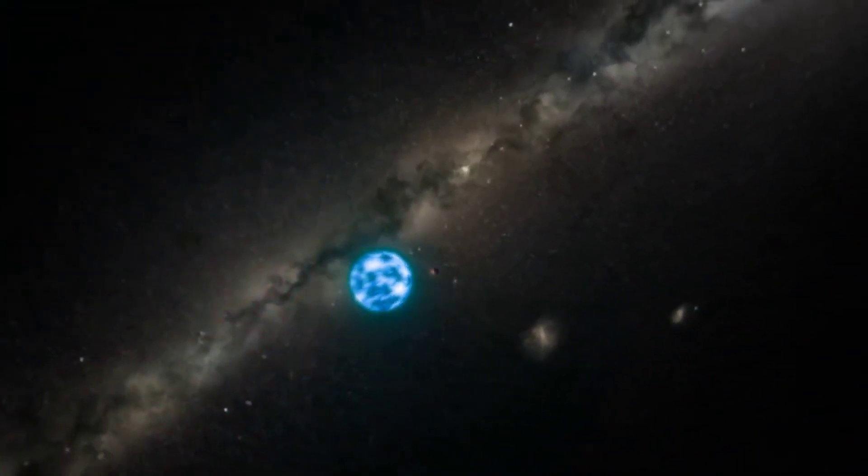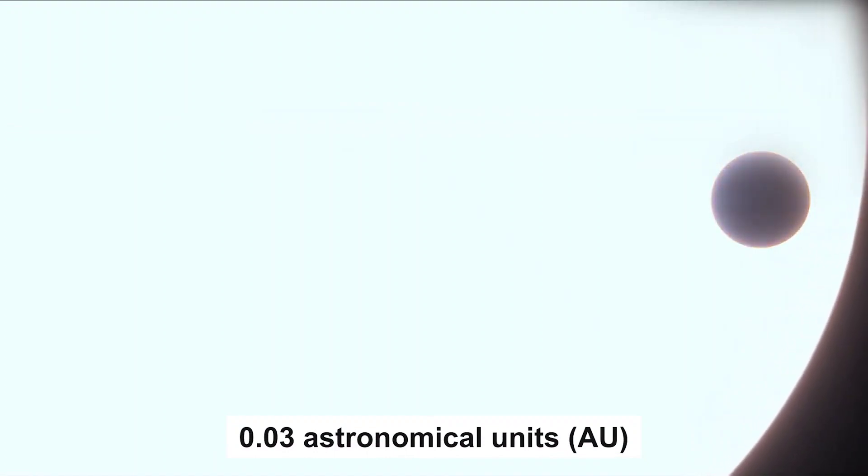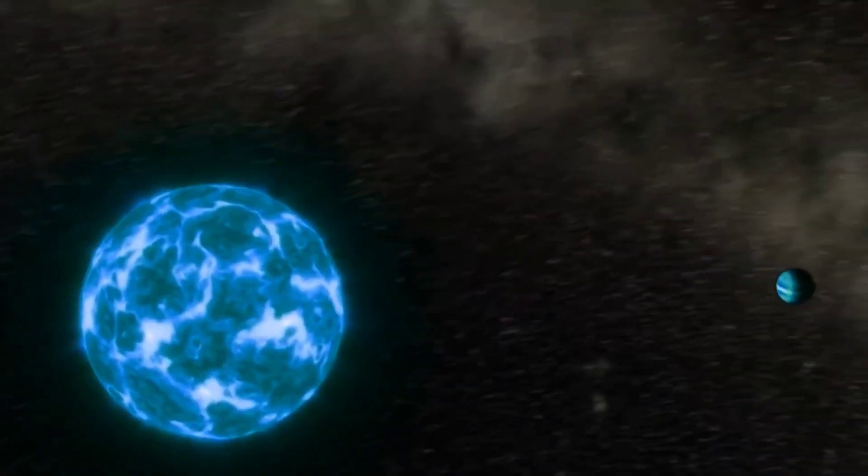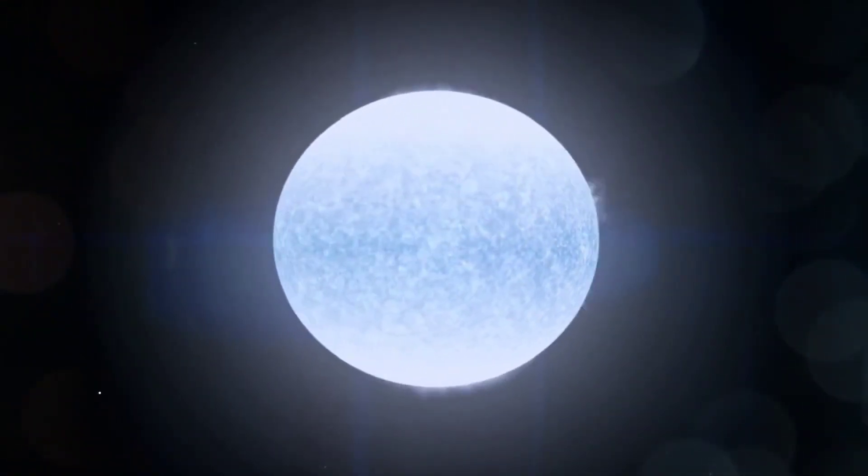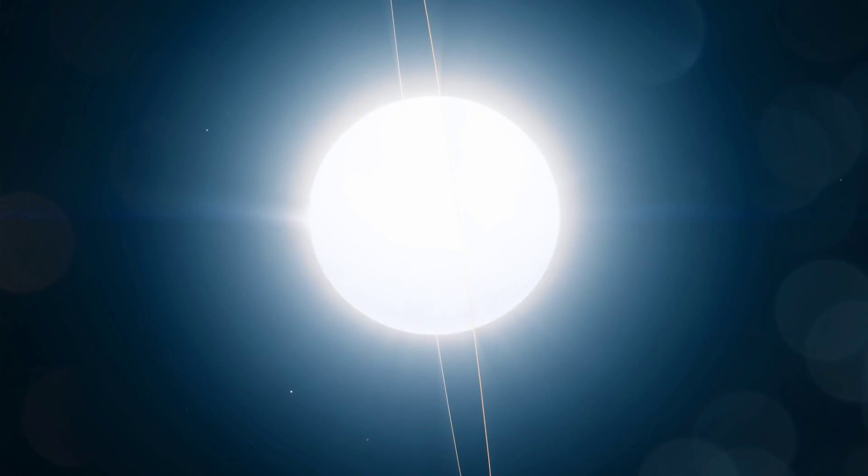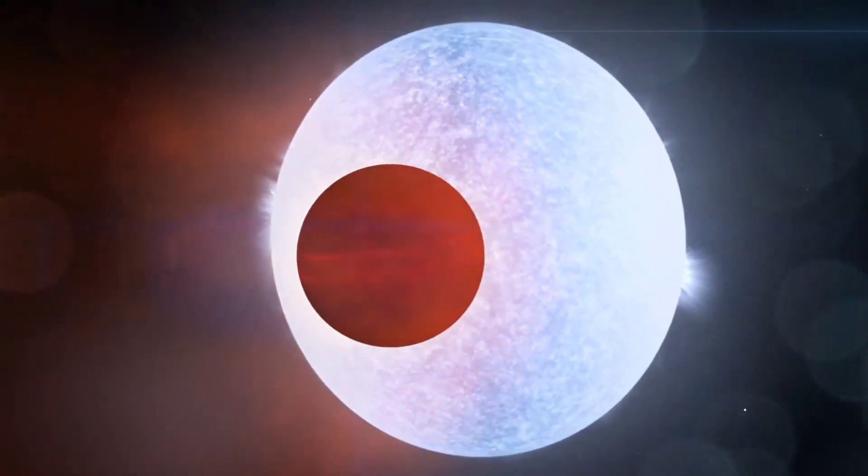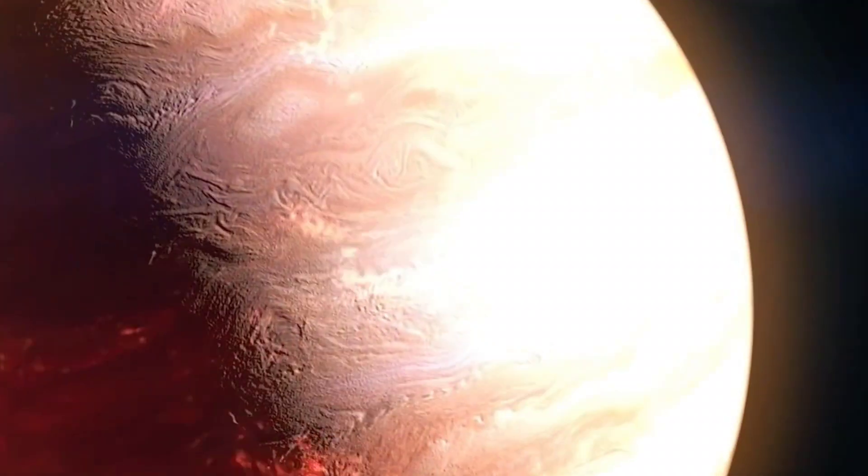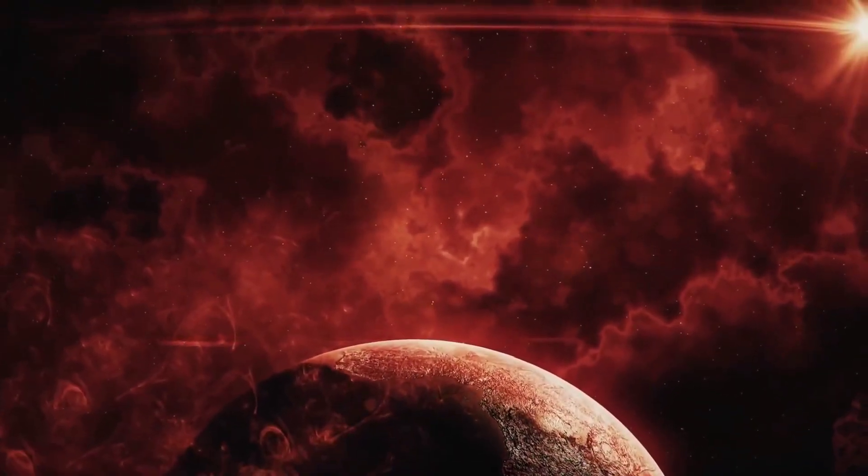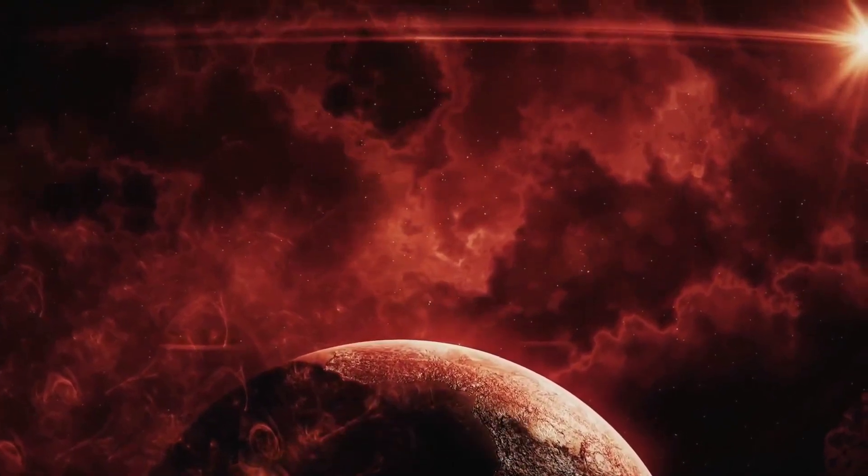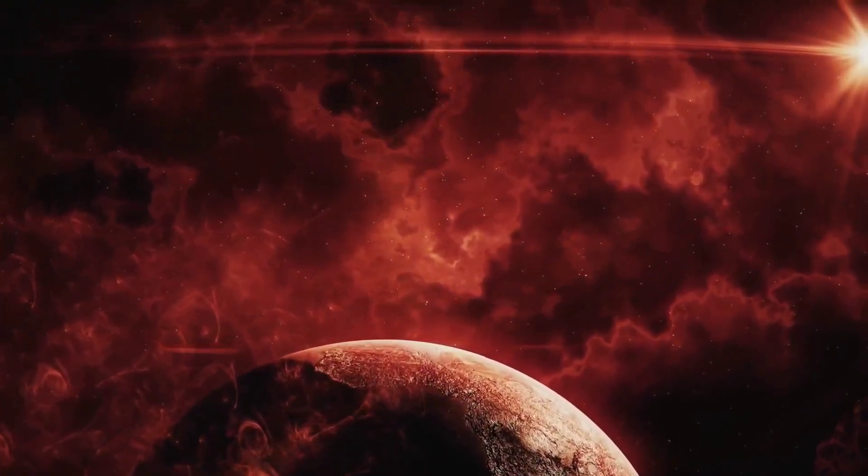This gas giant is about three times the mass of Jupiter and orbits its star at a distance of only 0.03 astronomical units, equivalent to approximately 5 million kilometers. Its orbit is so close to its star that it completes one revolution in approximately one and a half Earth days. The extreme conditions on KELT-9b classify it as a unique exoplanet. Its temperature is roughly 4,500 Kelvin, making it one of the hottest exoplanets known to man.